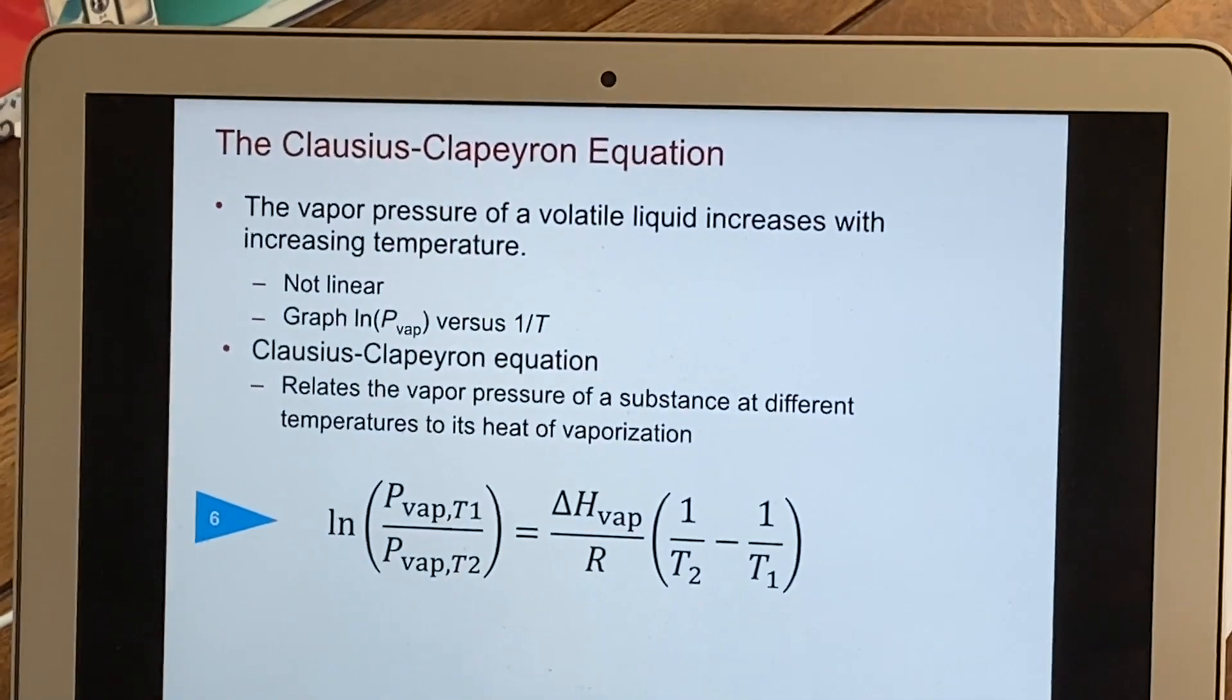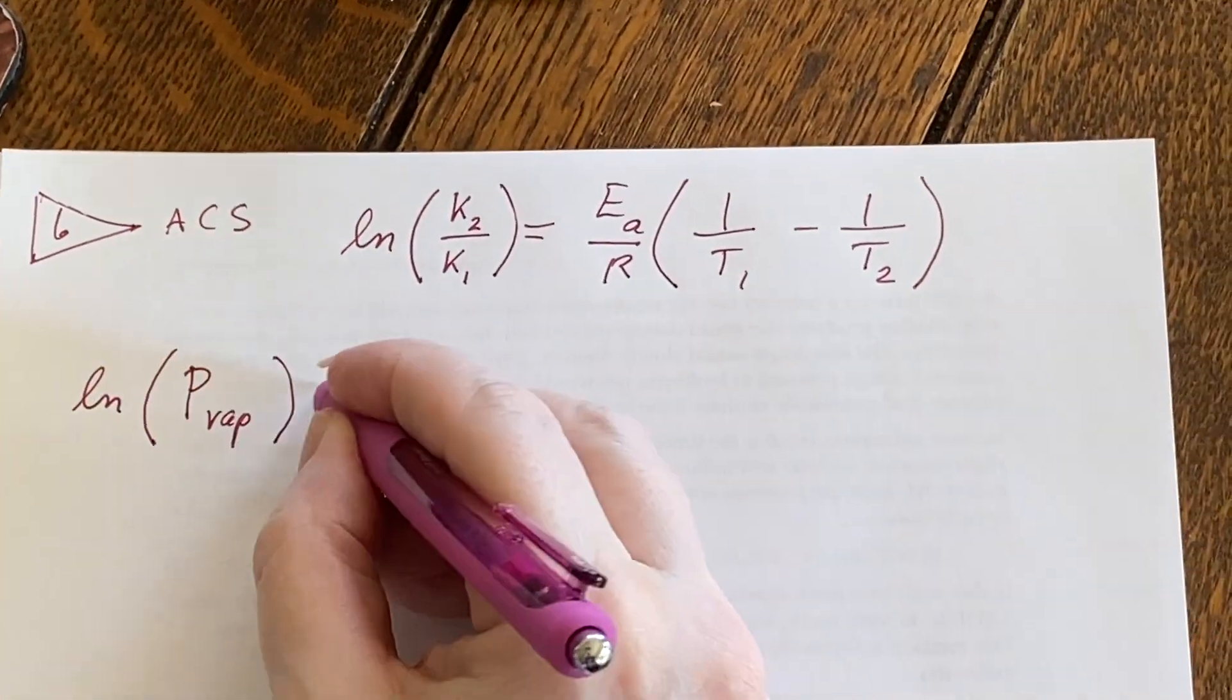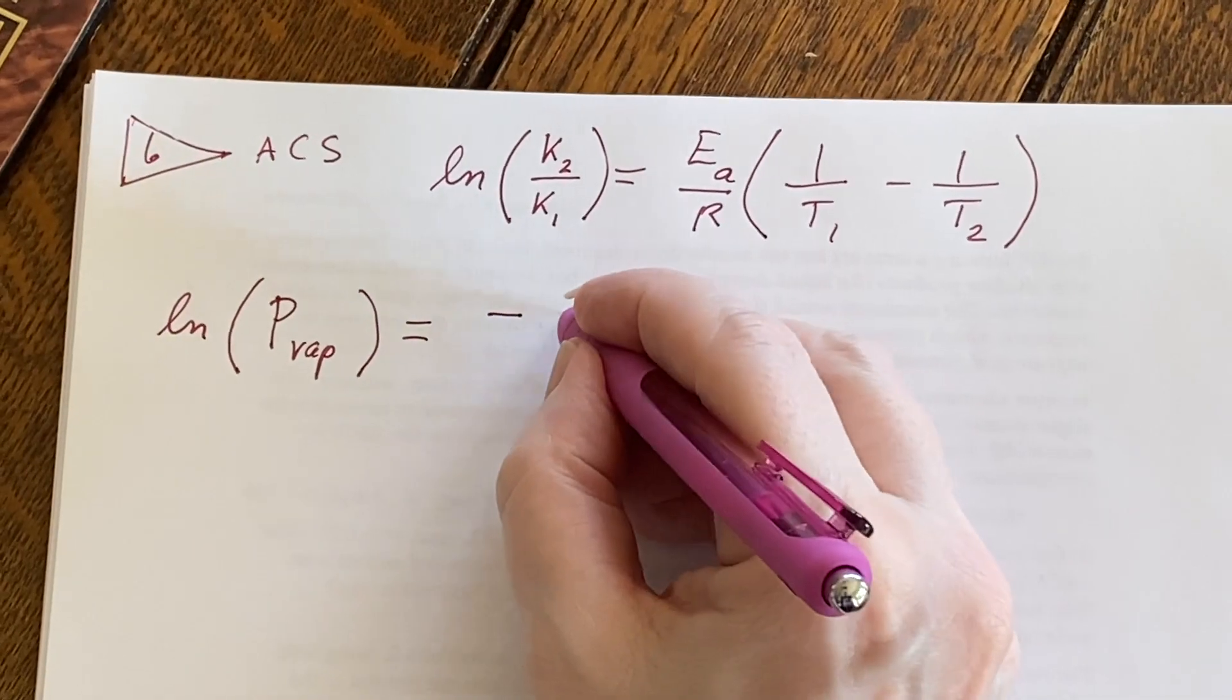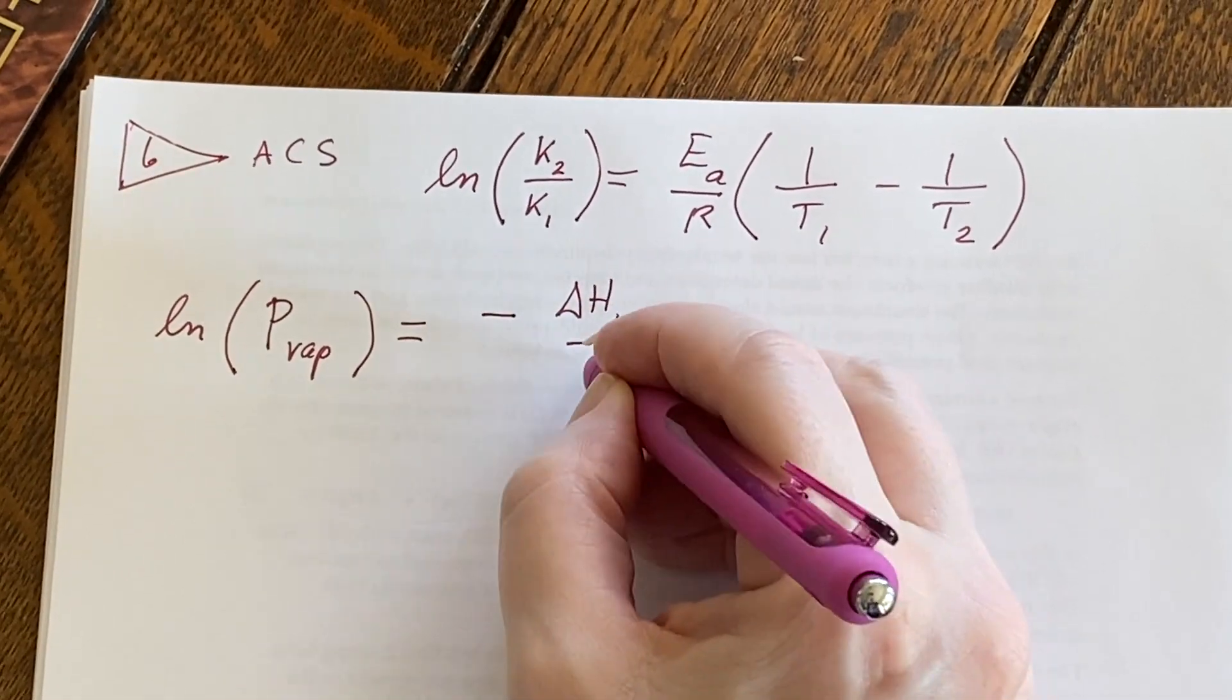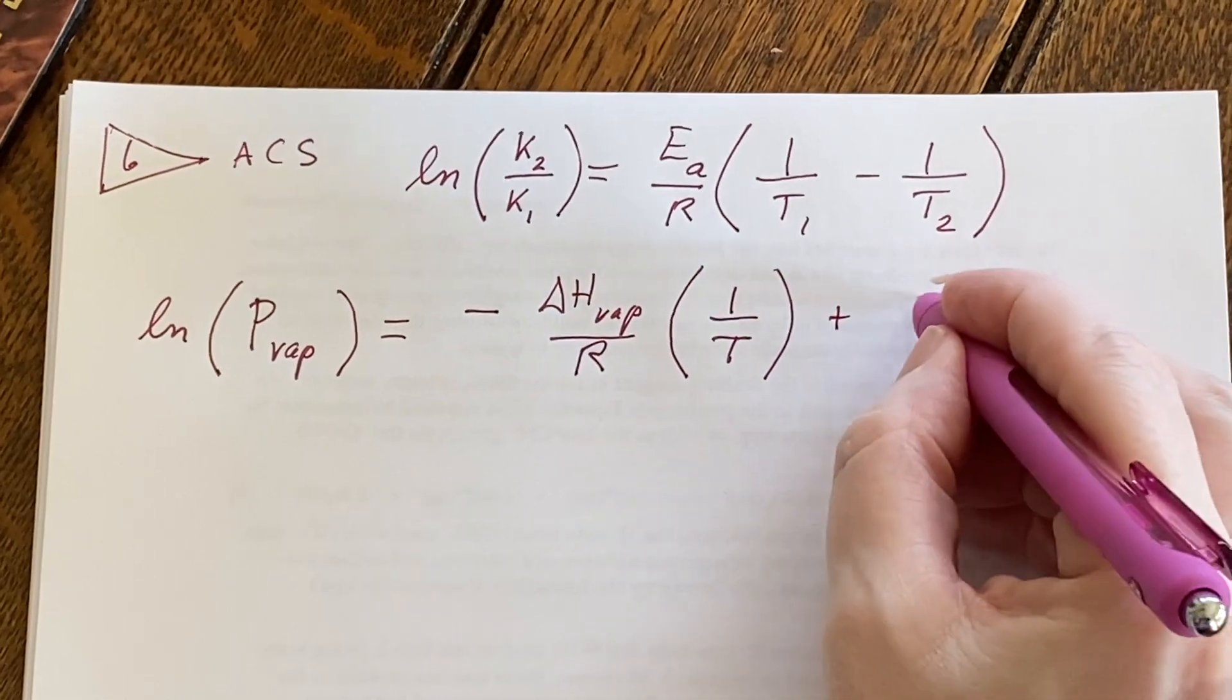Another way that this could be written is the logarithm of the pressure is equal to negative delta H of vaporization over R times one over T plus a constant.